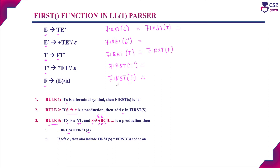Now we find FIRST(F). Considering the right-hand side of the productions for F: the first production F → (E) has open bracket as the beginning symbol, which is a terminal, so by Rule 1 we include open bracket directly. The second production F → id has id as the beginning symbol, also a terminal, so we include id directly. Therefore FIRST(F) = { (, id }.